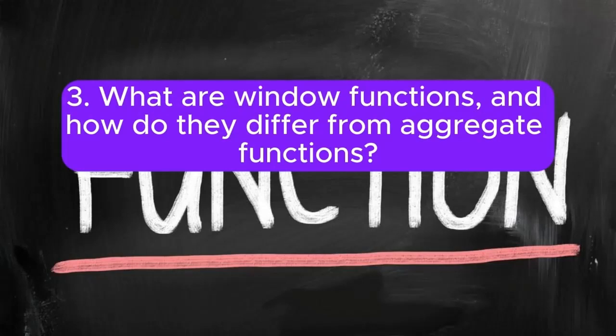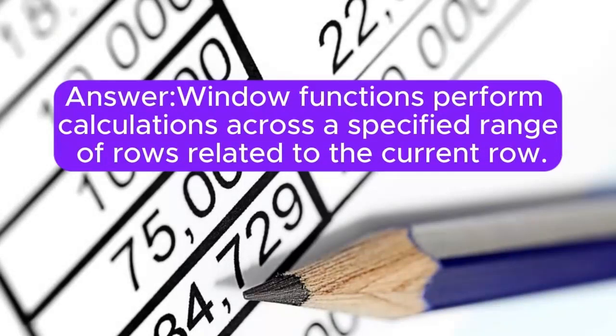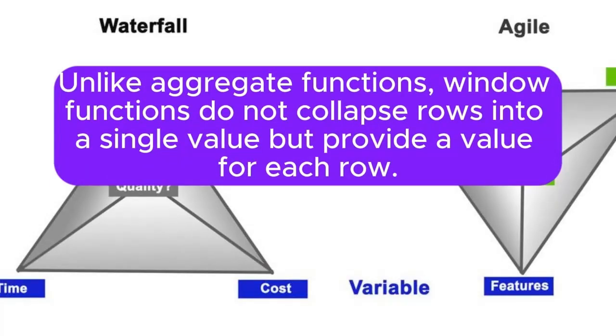Question 3: What are window functions, and how do they differ from aggregate functions? Answer: Window functions perform calculations across a specified range of rows related to the current row. Unlike aggregate functions, window functions do not collapse rows into a single value, but provide a value for each row.